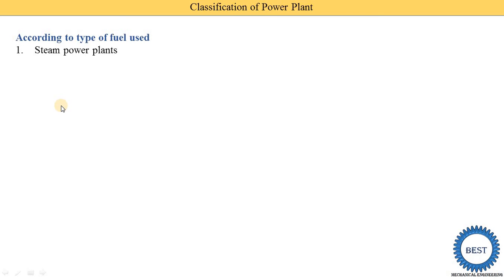The first type is the steam power plant. We burn any fuel like coal or wood, which produces heat energy. This heat energy is supplied to water, which is converted into steam. The steam is supplied to a turbine where mechanical energy is produced, and a generator connected to the turbine produces electricity.